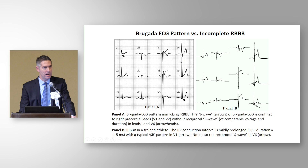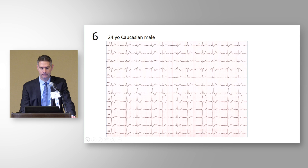Brugada pattern can be confused with right bundle branch block or incomplete right bundle branch block. Showing these patterns side by side: the Brugada pattern has that high takeoff, quick down-sloping, and symmetric T wave inversion, whereas right bundle branch block looks quite different. These contrasting examples help distinguish between the two patterns.